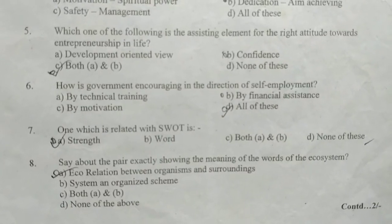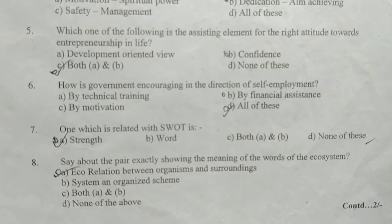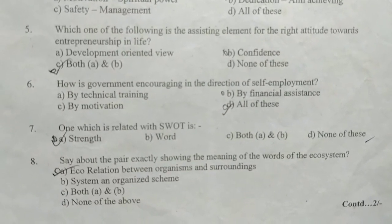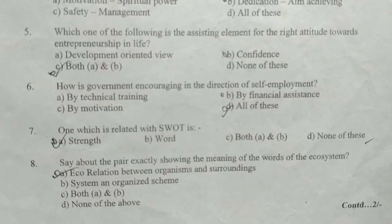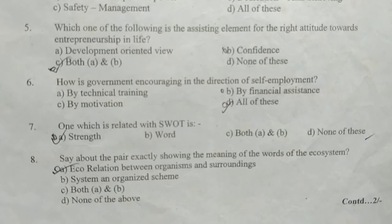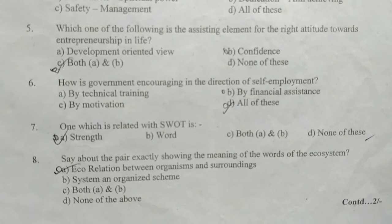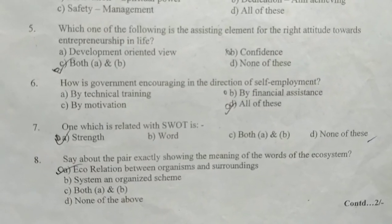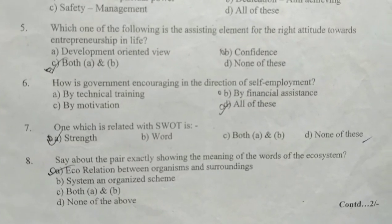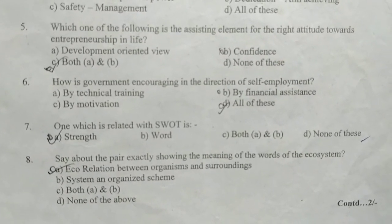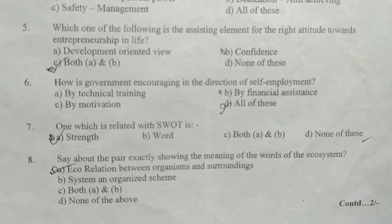Other options include: system and organized scheme, both A and B, and none of the above. The correct answer is eco-relation between organisms and surroundings.